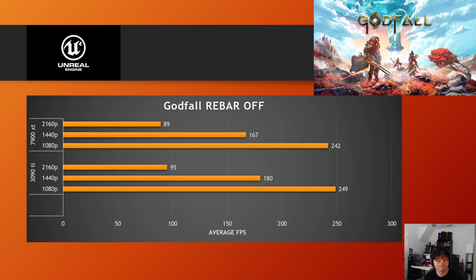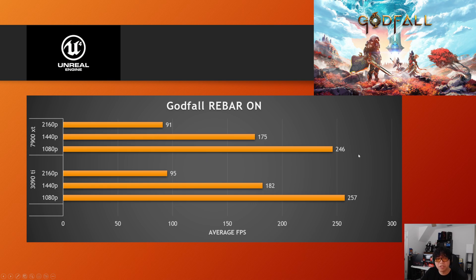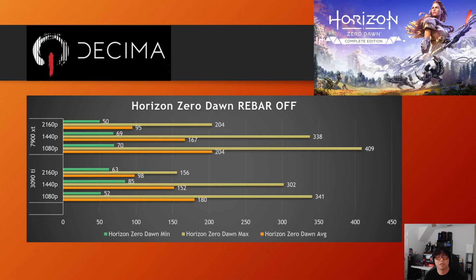Here's another UE4 game — Godfall, available on the Epic Game Store. The results here are kind of flipped: the 3090 Ti does better than the 7900 XT, particularly at lower resolutions, and holds a small lead even at 4K. When resizable bar is turned on, both GPUs increase average FPS, but the 3090 Ti maintains its lead. This is an example of a UE4 game where the Nvidia GPU does a little better, whereas in Borderlands 3 the AMD GPU had the edge.